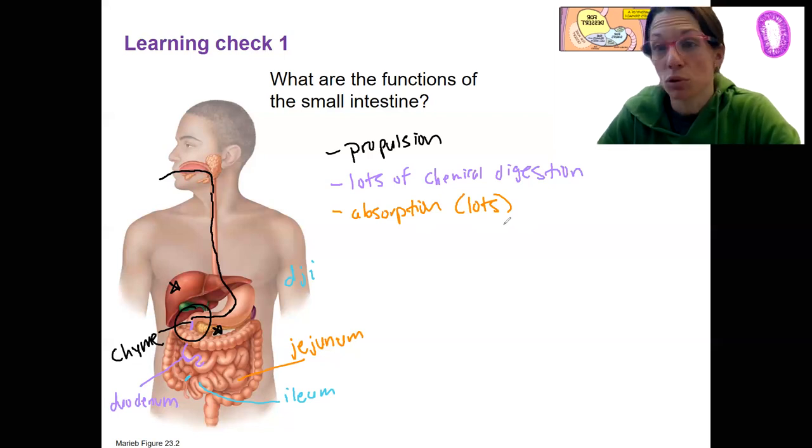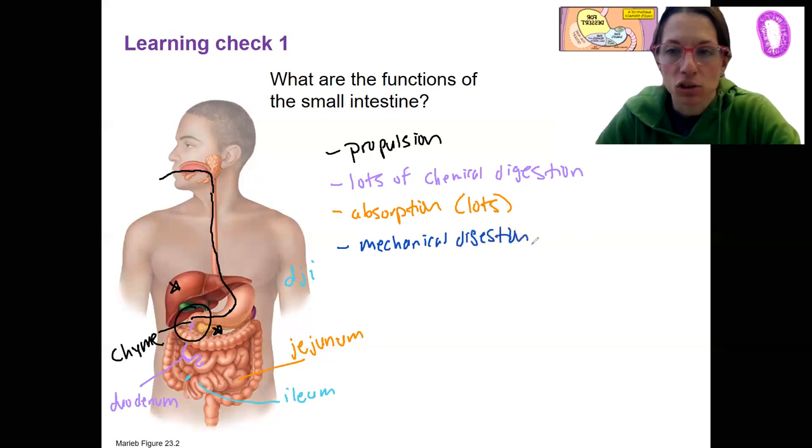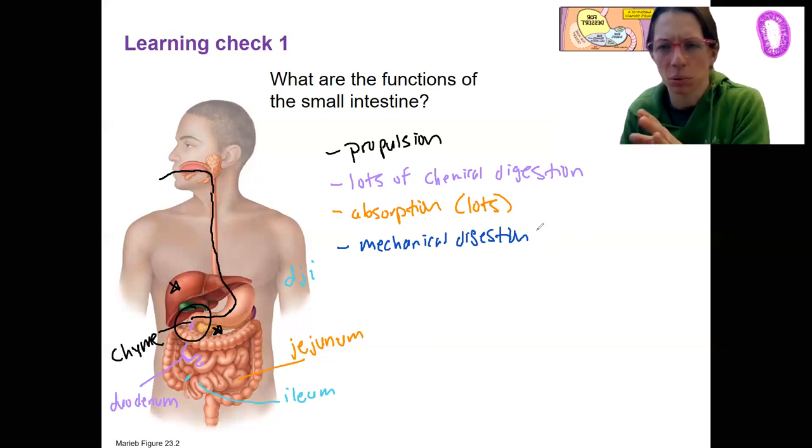So nutrients are going to go to the bloodstream and then actually go to the liver first. The last function we have is the last function that things have besides ingestion and defecation, which is not going to happen here. What's the other one? Mechanical digestion.